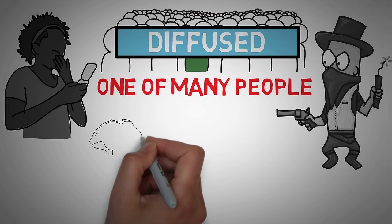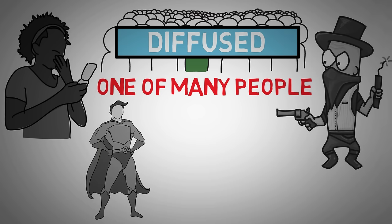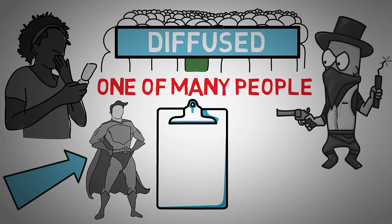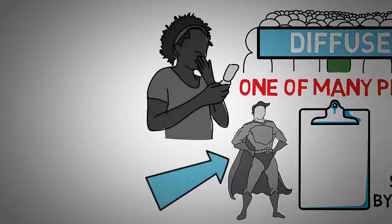We think that each person may even mentally assign the responsibility to someone in the crowd who looks more capable or that they should take action. Four years after the Kitty Genovese murder, two social psychologists conducted multiple studies on the bystander effect.